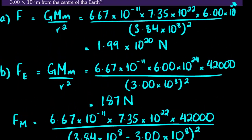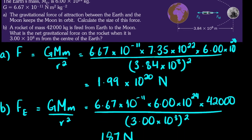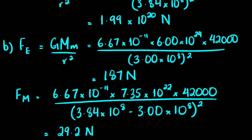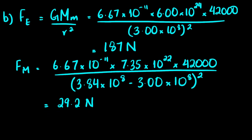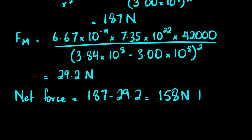The force exerted by the Earth (187 N) is toward the Earth, and the force by the Moon (29.2 N) is toward the Moon — in opposite directions. Since the Earth's force is greater, the net force is 187 − 29.2 = 158 N, directed toward the Earth.